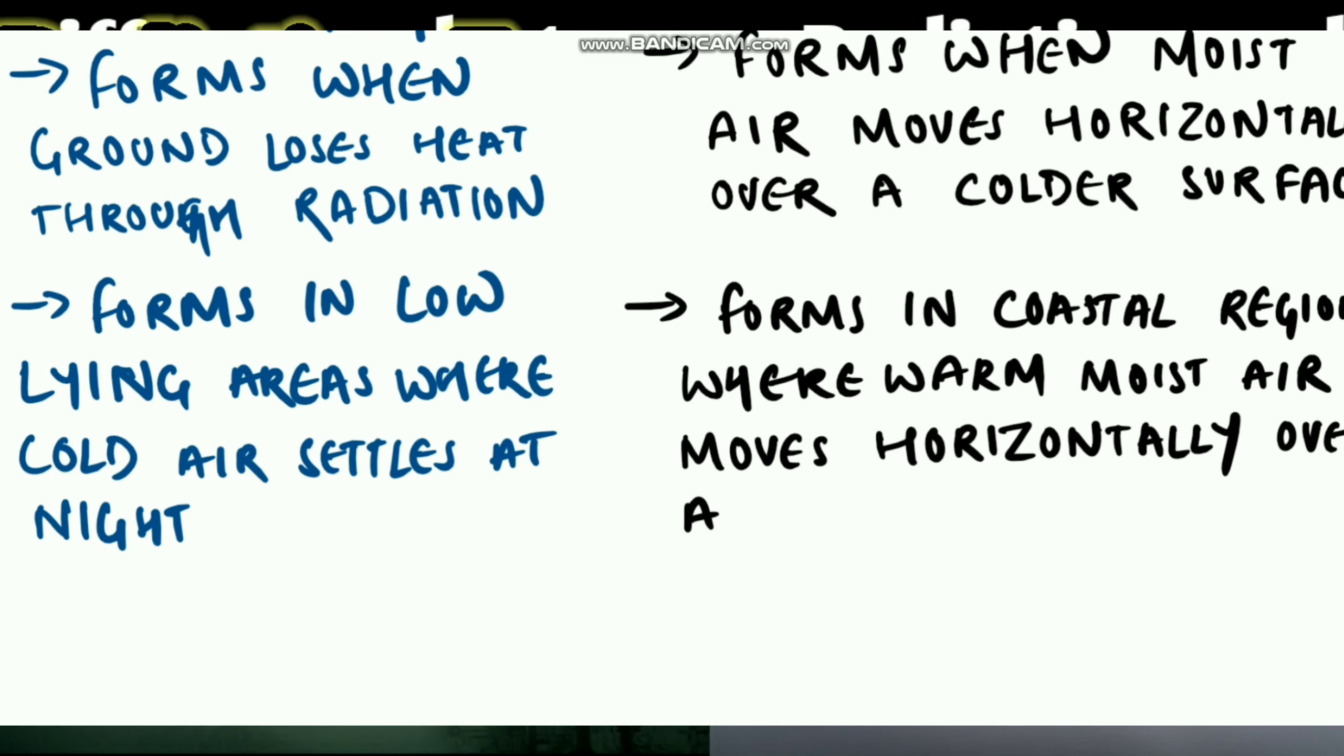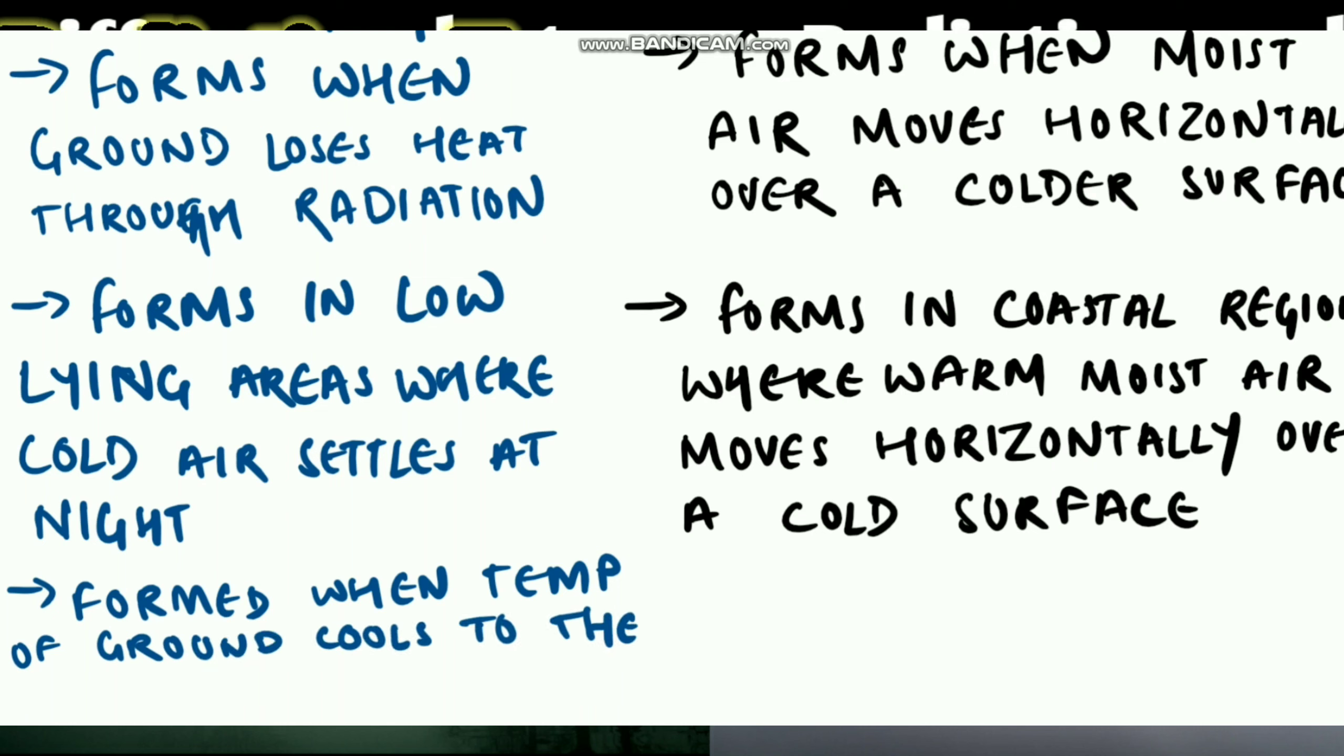Radiation fog forms when temperature of ground cools to the dew point temperature, whereas advection fog forms when warm moist air is cooled to the dew point.